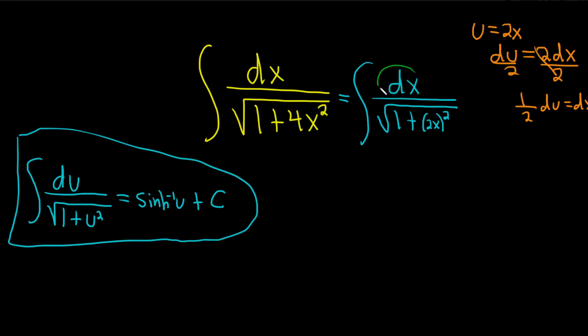So this dx, I'm going to replace that with 1 half du. So I'll pull out the 1 half, and then we have our du here. And then on the bottom, we have the square root of 1 plus, and then we said u was 2x. So this is u squared.